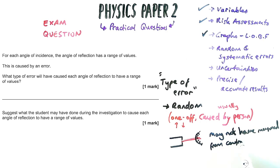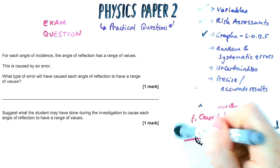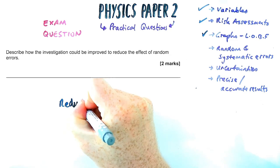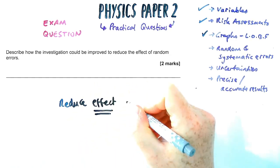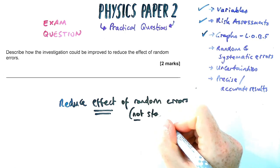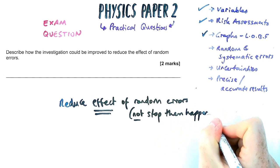And what the student might have done in this one, they might not have measured from the center of the ray, or they might have nudged the ray box or the protractor to cause that to happen. Now, these random errors, how do we reduce their effect? Now, it doesn't say how to stop them happening. It says how to reduce their effect. And this is the same mark scheme for every practical. So I haven't even told you where this practical came from, because it's the same for each time it comes up.